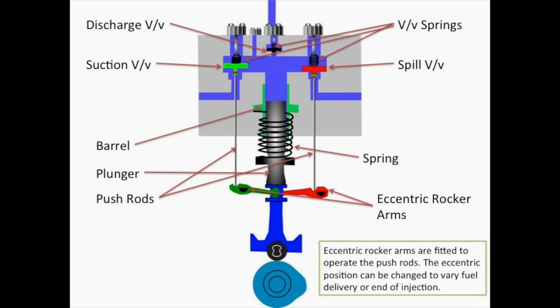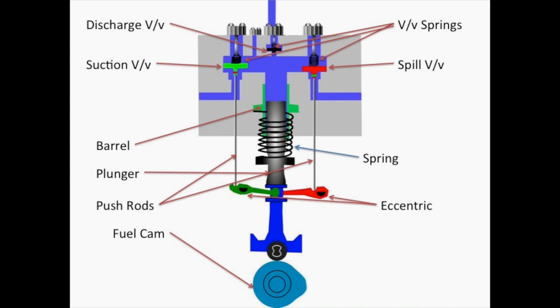The eccentric position can be changed to vary fuel delivery or end of injection timing. A cam in the fuel pump camshaft operates the reciprocating movement of the plunger through a cam follower. The roller or cam follower transmits the movement of the cam to the plunger. These are the different parts involved in the construction and operation of the fuel pump.